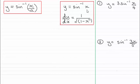If y equals the inverse sine of x it can be shown that dy by dx equals 1 all over the root of 1 minus x squared. And notice it is not plus or minus, it's just the positive value.